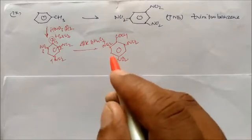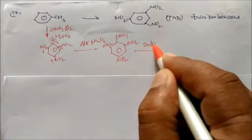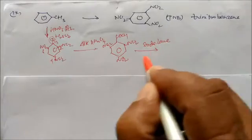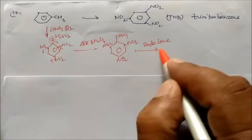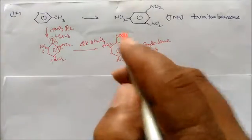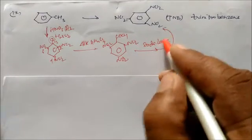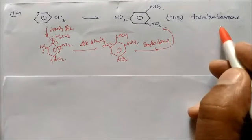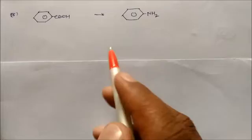Again, if you give soda lime, soda lime will do a decarboxylation reaction. CO2 will come out, and the product will be trinitrobenzene, TNB. Next is benzoic acid to aniline.